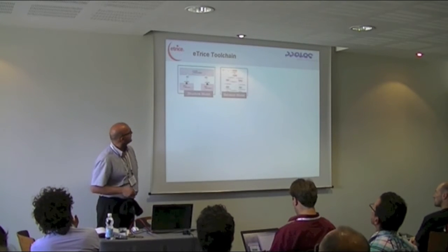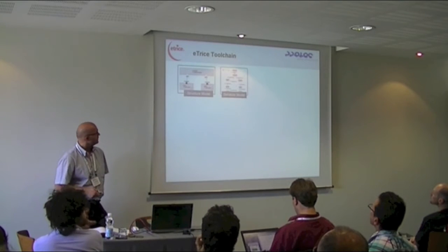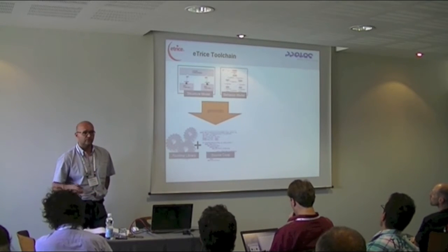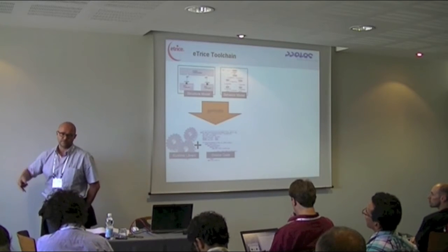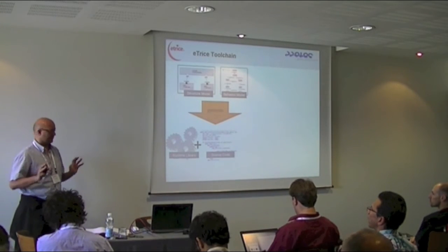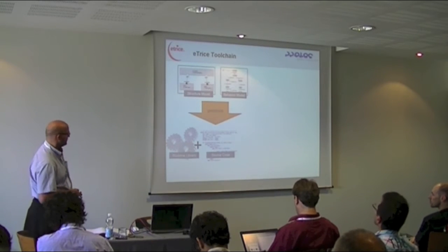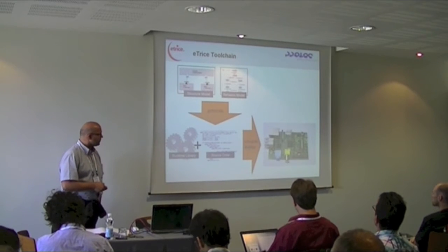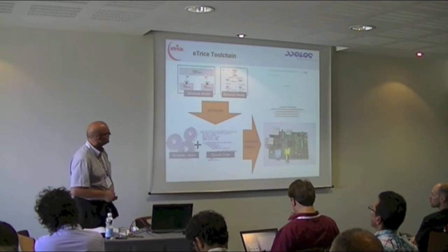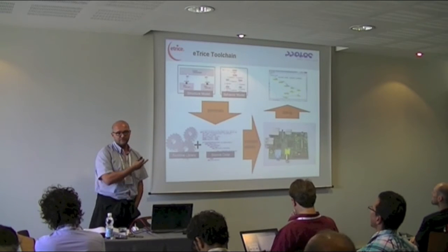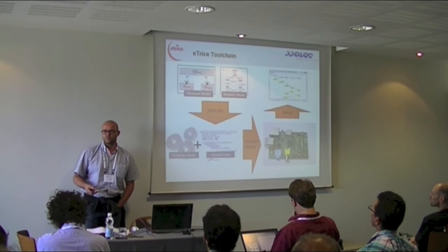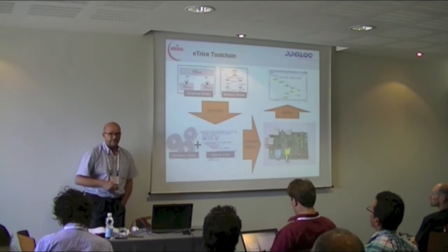What does the toolchain look like? You model the structure and behavior of your system, then generate code in C, C++, or Java. You bind it to a runtime library for portability — it's basically a very small middleware, a portability layer. Then you compile and deploy to your target using the target development compiler. You can debug by visualizing the generated message sequence charts. More graphical model-level debugging is in progress.